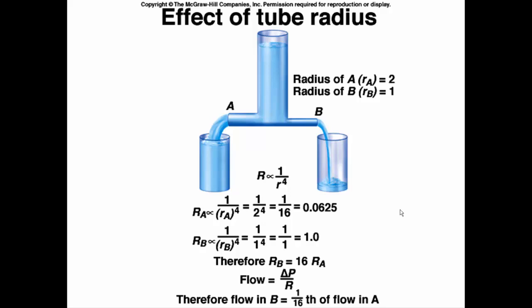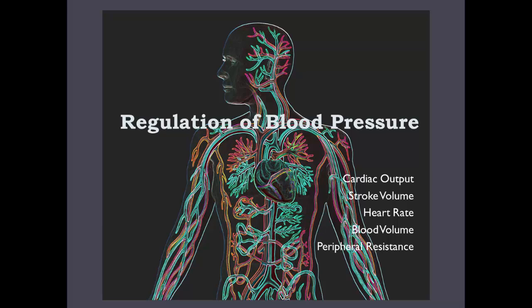I'm not going to expect you to do the math, I just want you to see that this change in radius is a huge change in resistance. In the next video, we're going to look at the regulation of blood pressure. We're going to put everything together about the cardiovascular system in a series of lectures - cardiac output, stroke volume, heart rate, blood volume, peripheral resistance, all these things because we want to be able to control blood pressure.